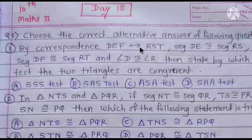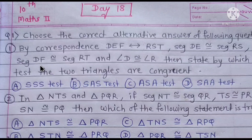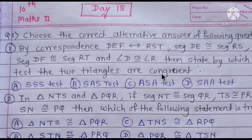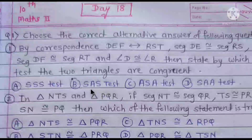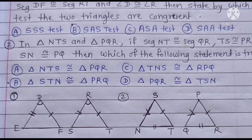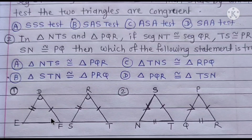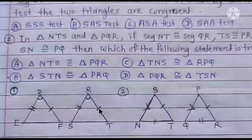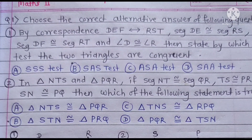By correspondence DEF ↔ RST: segment DE ≅ segment RS, segment DF ≅ segment RT, and angle D ≅ angle R. Then state by which test the two triangles are congruent. Side DE is congruent to RS, angle D is congruent to R, and side DF is congruent to RT. This gives Side-Angle-Side, meaning SAS. Option number 2.